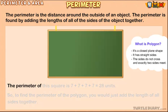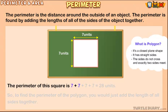The perimeter of this square is 7 plus 7 plus 7 plus 7 equals 28 units.